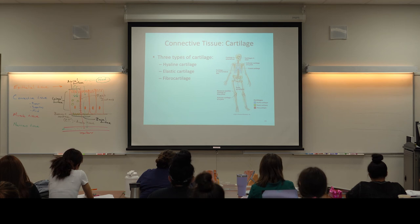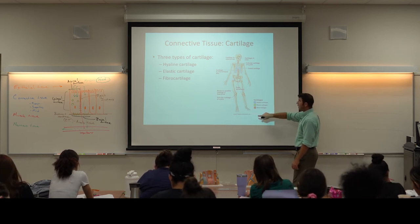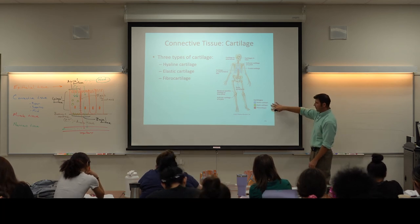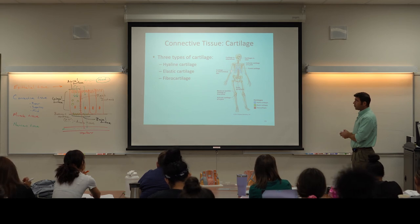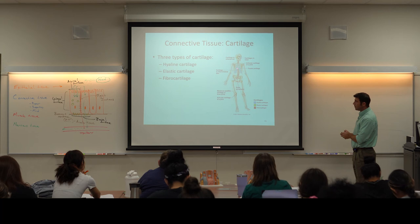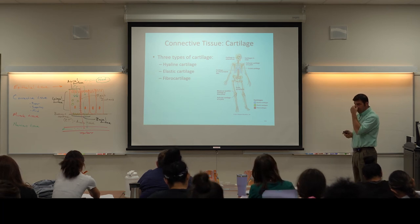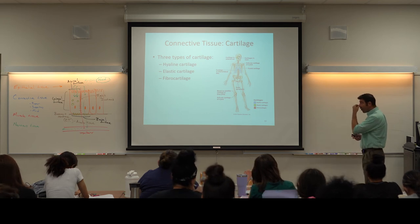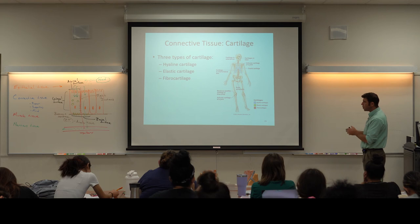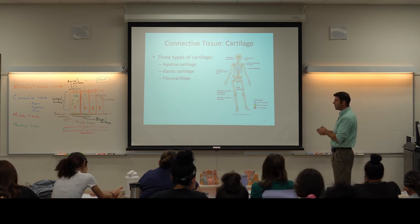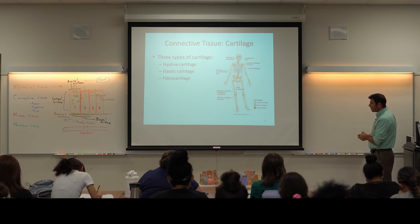The next few slides take us into supporting connective tissue — the three types of cartilage plus bone. This picture is an overview of where we find the three types of cartilage. The most common is hyaline cartilage, found in all the blue areas: the rib cage, the bridge of the nose, and the ends of long bones are covered in hyaline cartilage, which prevents the bones from grinding together. If you lose that hyaline cartilage and bones start to grind together, that's one form of arthritis.